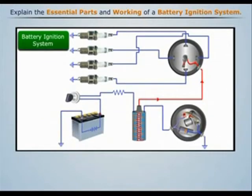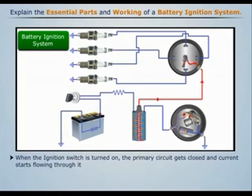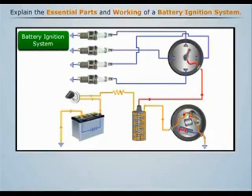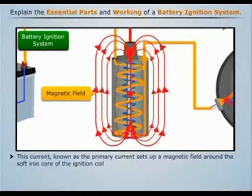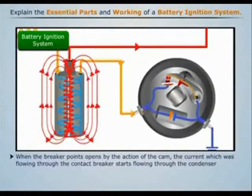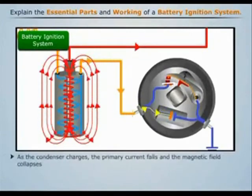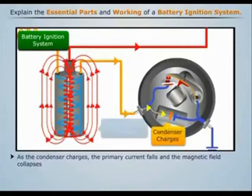Now let's understand the working of the ignition system. When the ignition switch is turned on, the primary circuit gets closed and current starts flowing through it. This current, known as the primary current, sets up a magnetic field around the soft iron core of the ignition coil. When the breaker point opens by the action of the cam, the current which was flowing through the contact breaker starts flowing through the condenser. As the condenser charges, the primary current falls and the magnetic field collapses.